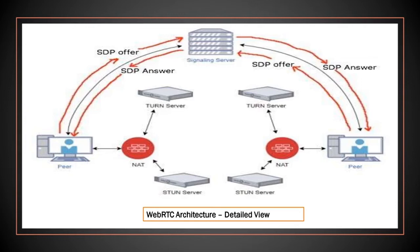I will explain with an example now. Suppose user A wants to connect with user B. The first step is that user A and user B should connect to the signaling server. Next, user A sends an SDP offer request to user B through the signaling server. Then the signaling server sends that offer to user B. If user B is ready to connect, user B sends an answer to that offer back to the signaling server. Finally, the signaling server sends back the answer to user A. Now the SDP offer and answer exchange has been completed.